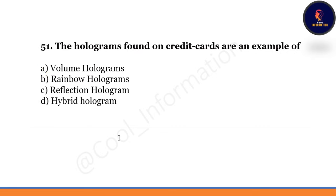The hologram found on credit cards is an example of what? Option A: volume hologram. Option B: rainbow hologram. Option C: reflection hologram. Option D: hybrid hologram. Correct option is B — rainbow holograms.